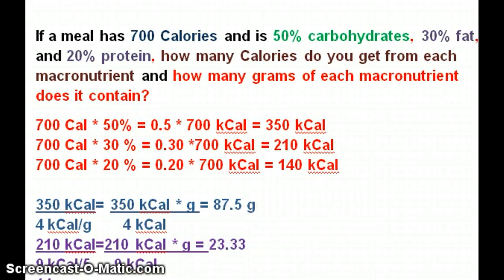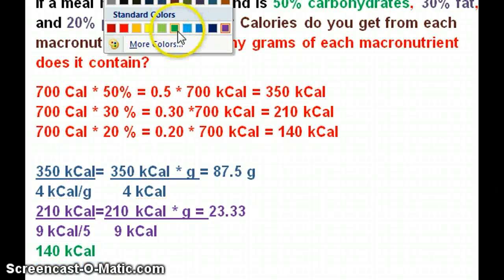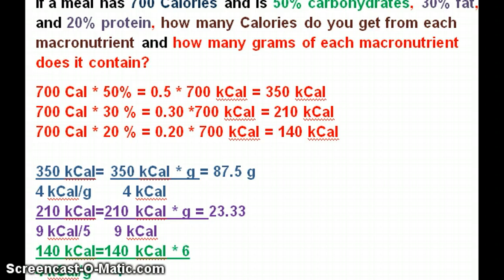For the third one: 140 kcal from protein. The energy density for protein is 4 kcal per gram. So that equals 140 kcal times grams over 4 kcal, and that equals 35 grams from protein.